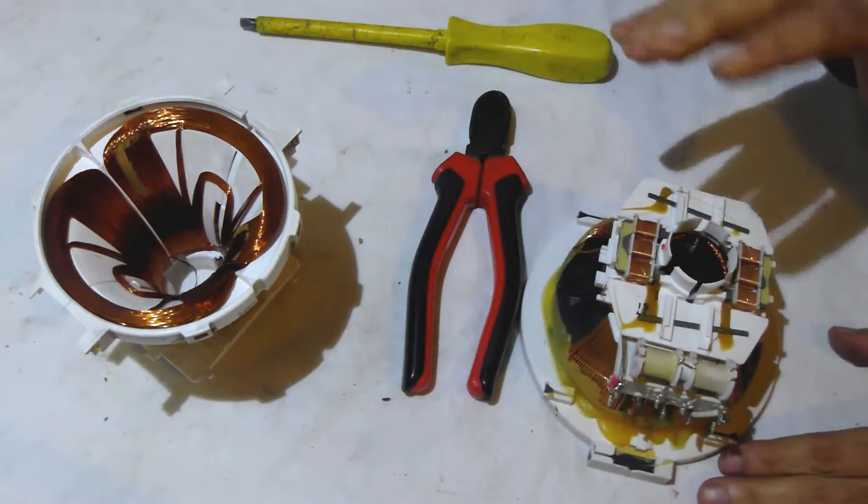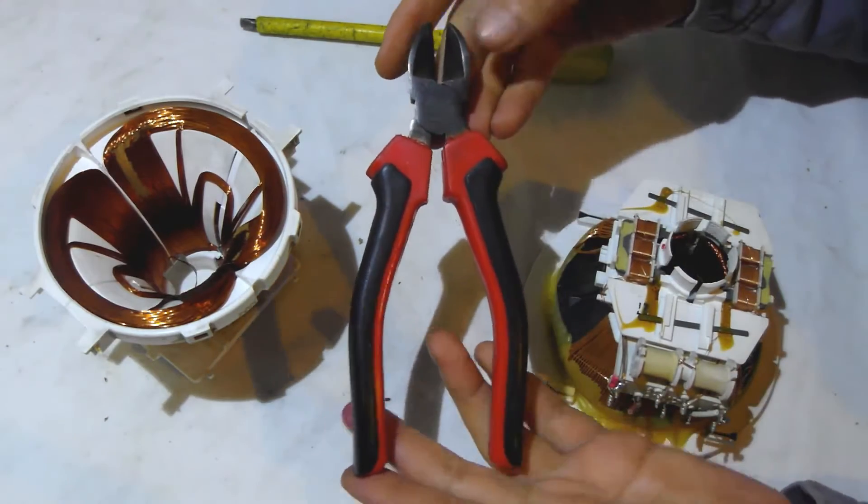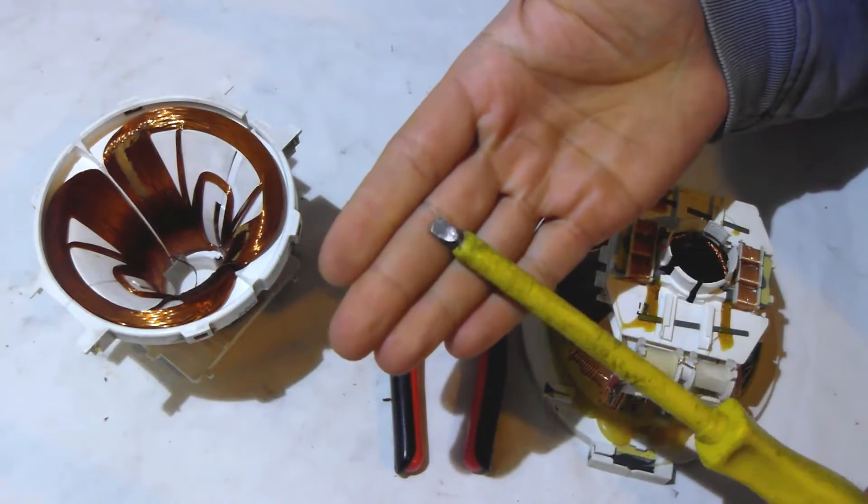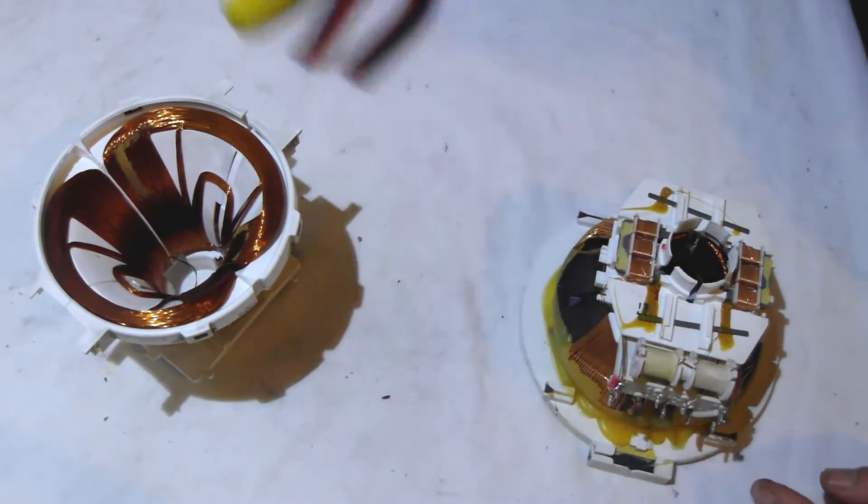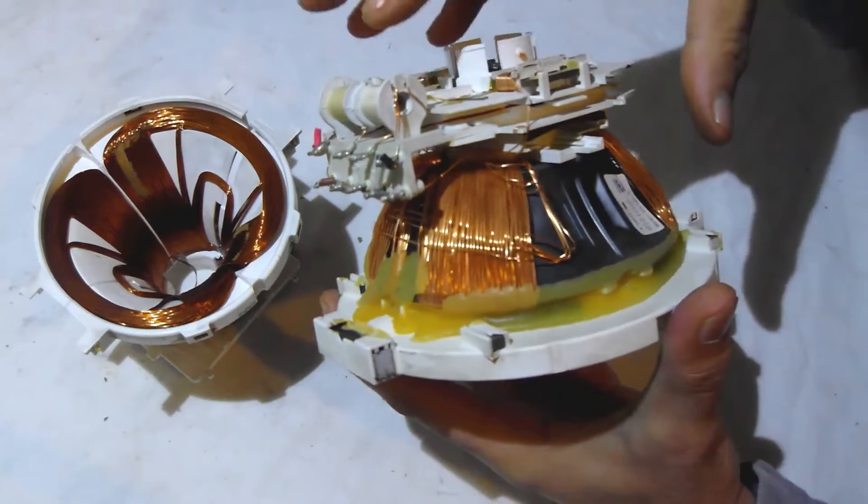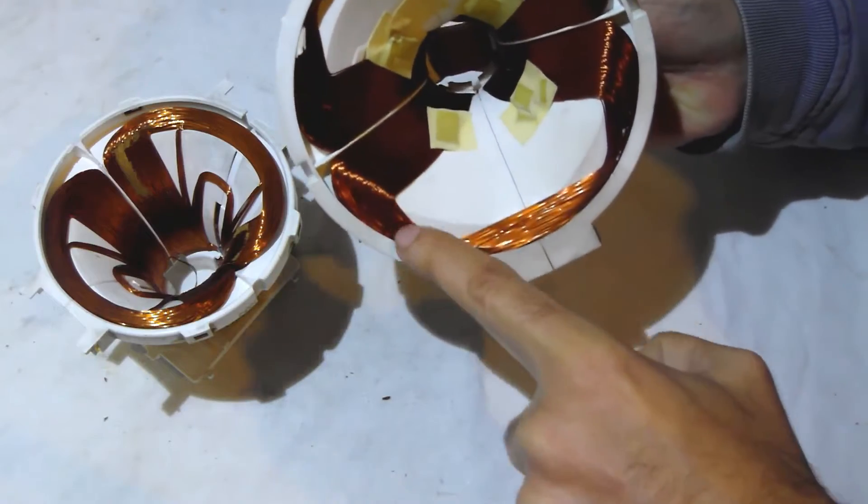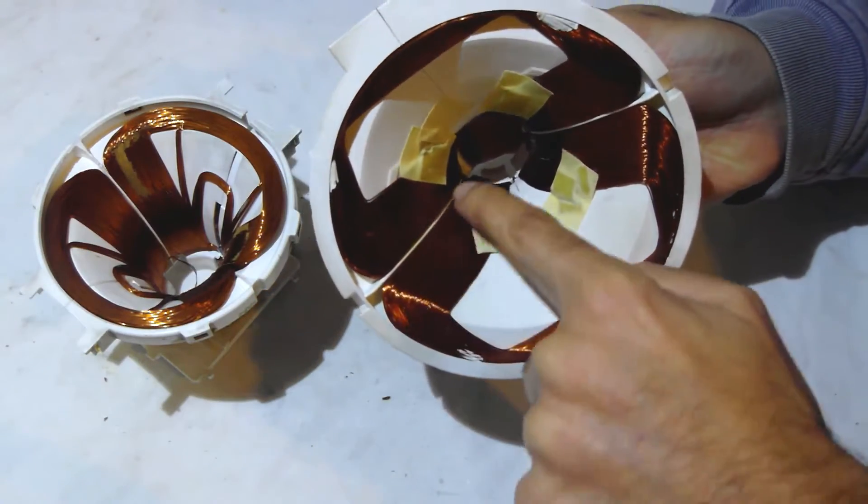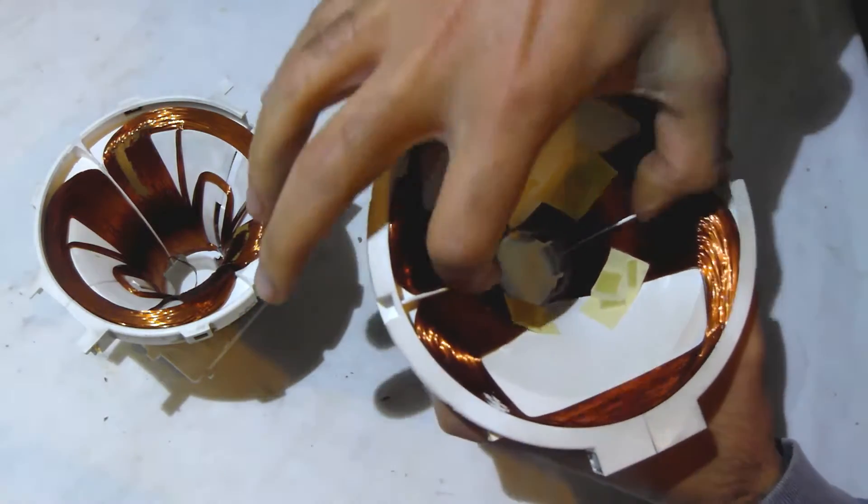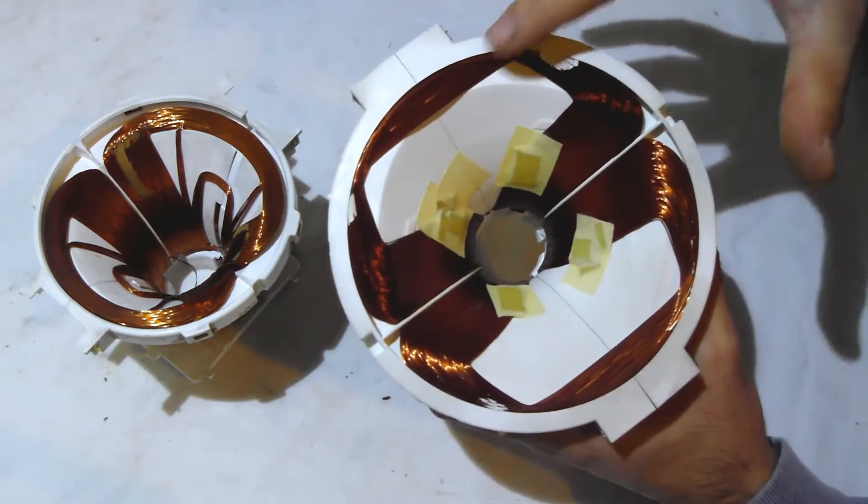For today, the tools you will need is a pair of side cutters and a screwdriver, just a flat blade standard screwdriver. The way these yokes are assembled is in two hemispheres. You'll notice this winding here is separated from that winding there because they come apart in two halves, same as this plastic casing does.